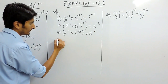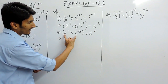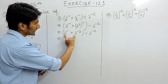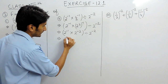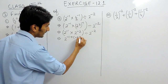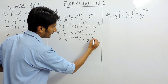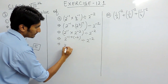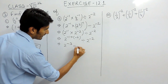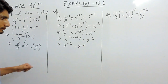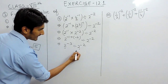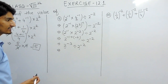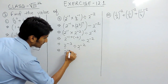The bases are the same and they are multiplying each other, so we add the powers. This gives 2 raised to power minus 3, divided by 2 raised to power minus 2. Again, the bases are the same and we are dividing, so we subtract the powers.